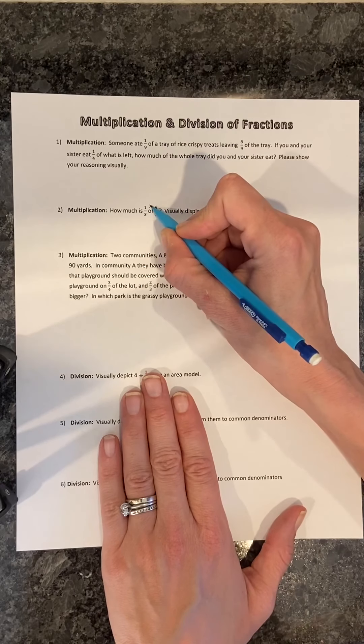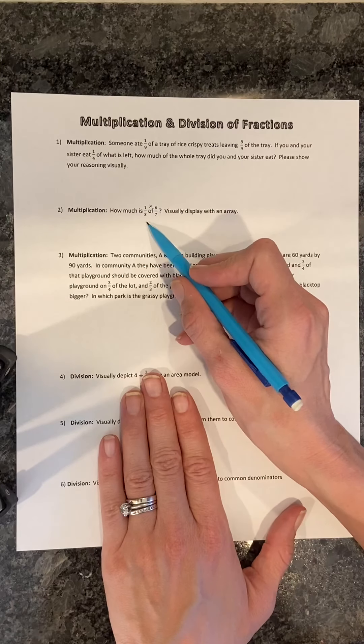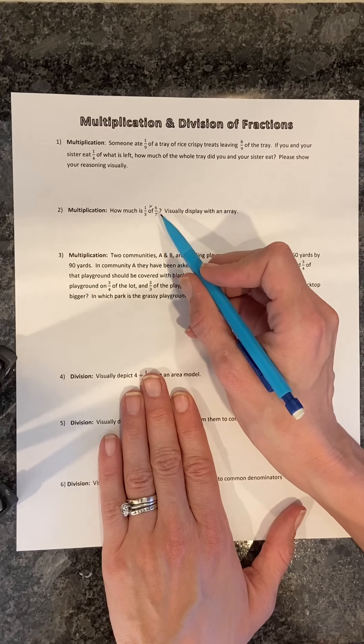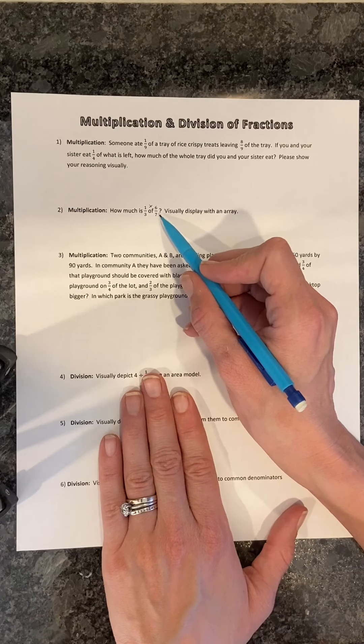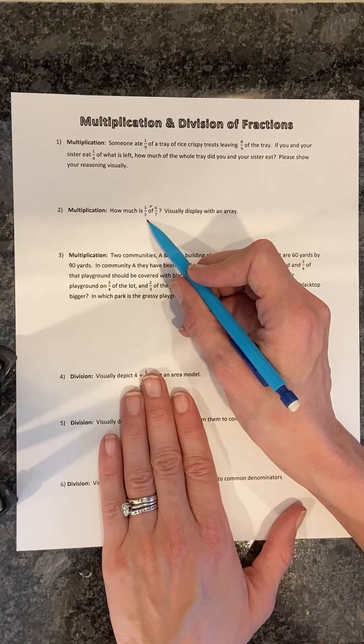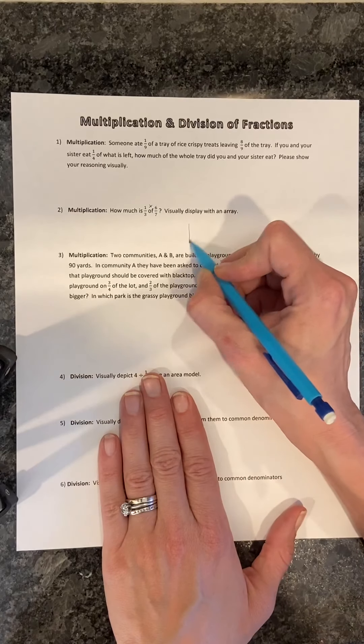We can do this in one of two ways. You can depict one-third first and then divide it into the sevenths afterward, or depict six-sevenths and divide it into one-third. I'm going to go ahead and do my six-sevenths first.